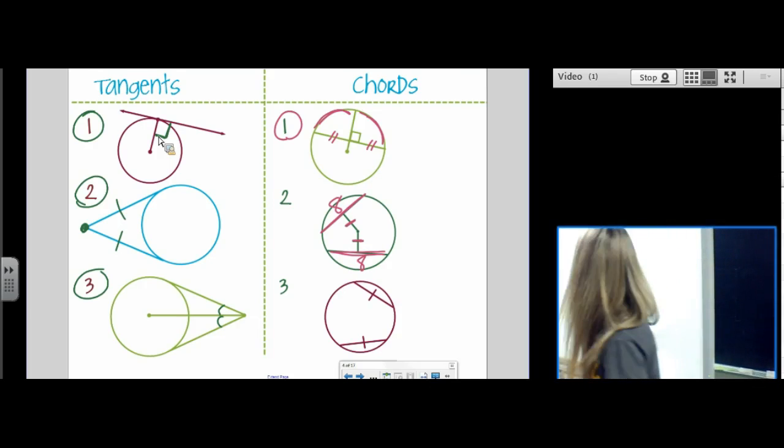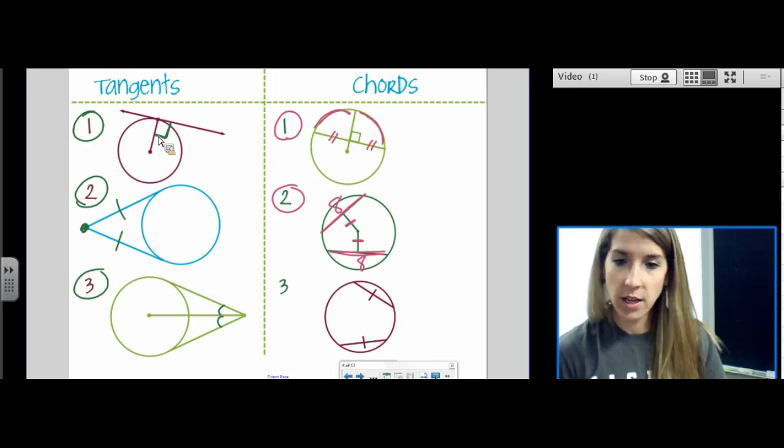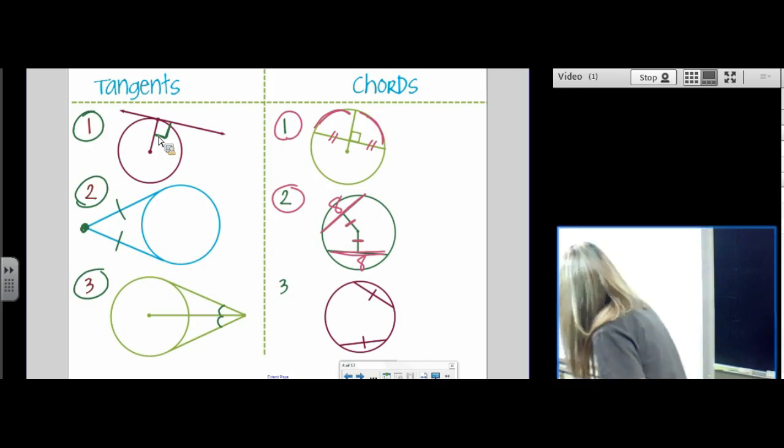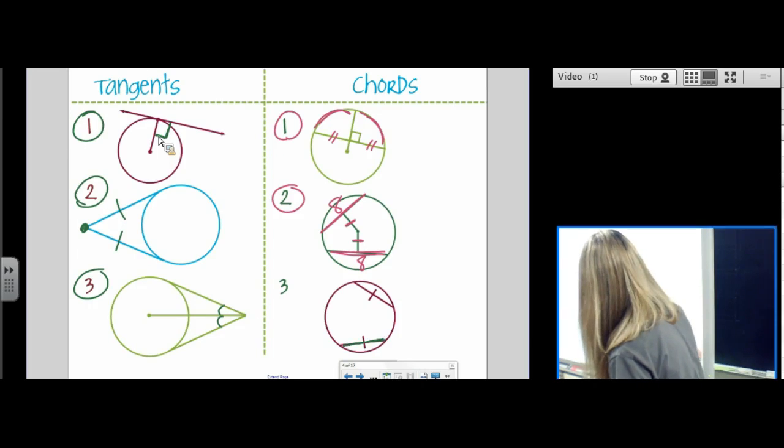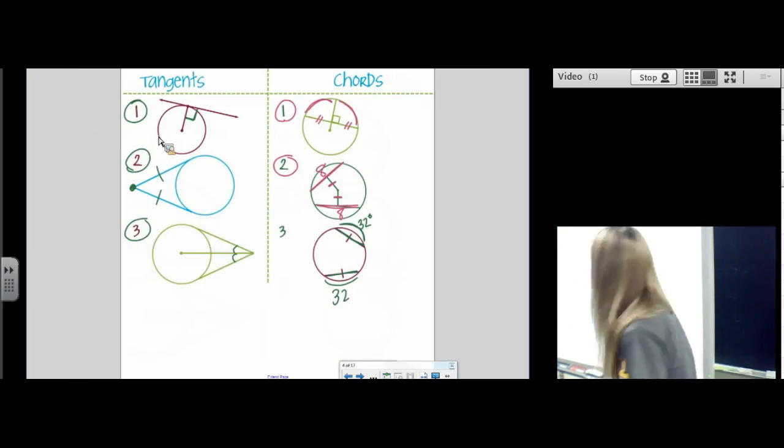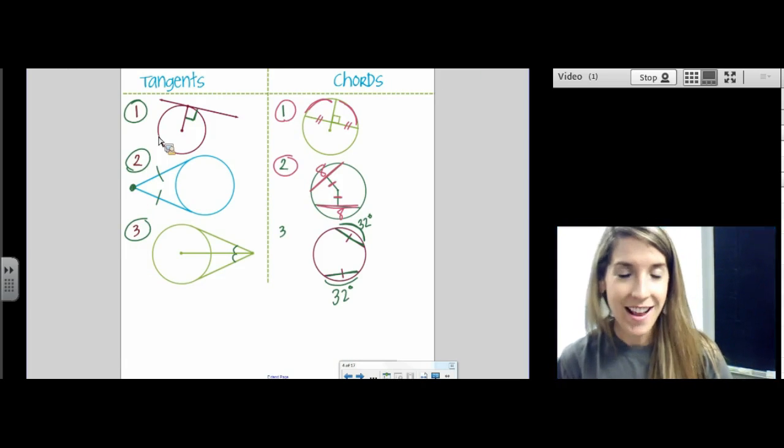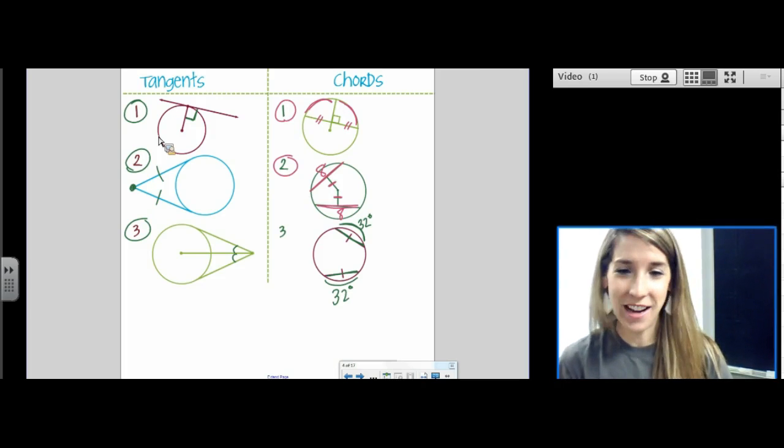The third theorem we learned is that congruent chords intercept congruent arcs. So if this arc is a 32 degree arc, then this arc is a 32 degree arc. Congruent chords intercept congruent arcs. And there is our whole circles unit in two slides.